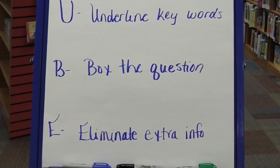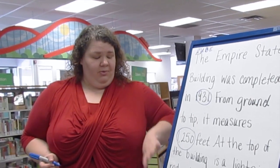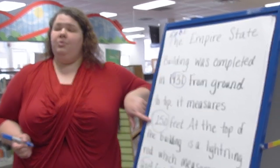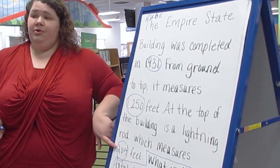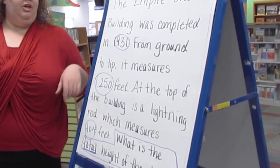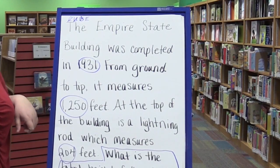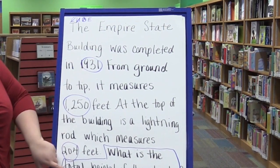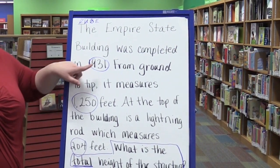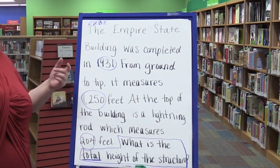The last step is eliminate. I need to eliminate any information that doesn't help me solve our problem. Right now I've circled 1931, 1250, and 204, and the word 'total' tells me to add. So now I need to read it more carefully and eliminate extra information. The Empire State Building was completed in 1931. My question is what is the total height of the structure, so this number does not help me understand the total height of the structure. I can eliminate that.